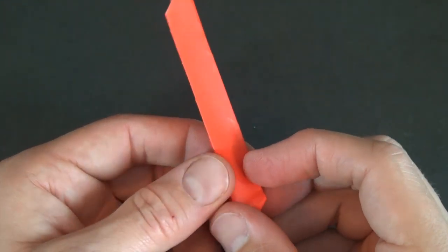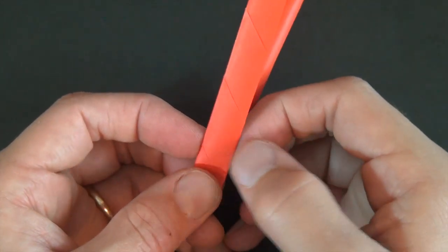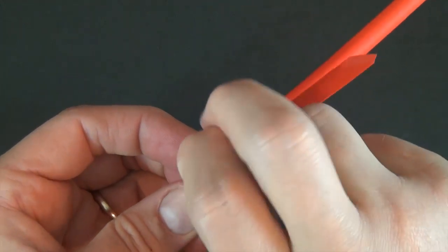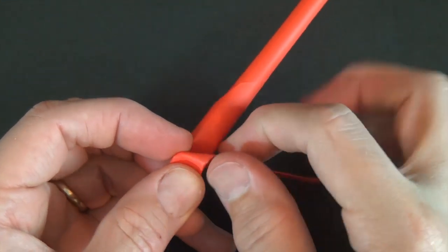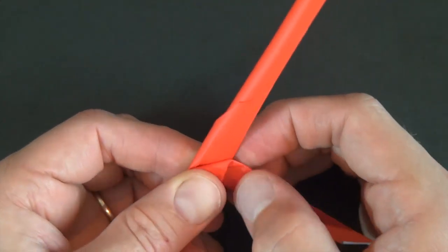Let's turn over. And now let's take this flap again, the flat one, and let's unfold it and fold it so that it goes to the right. Like that.